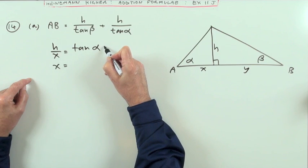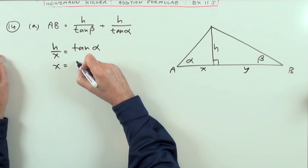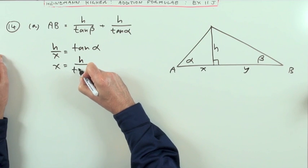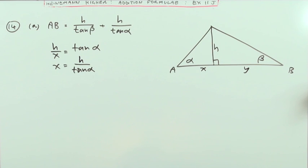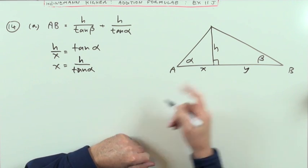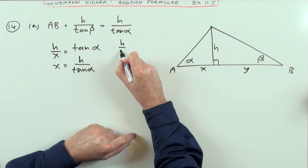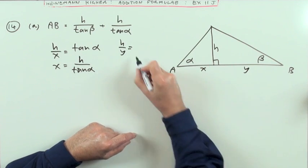Getting x on its own will require that to multiply up, so the tangent will have to multiply down, divide down, which gives you x is equal to h over tan alpha.